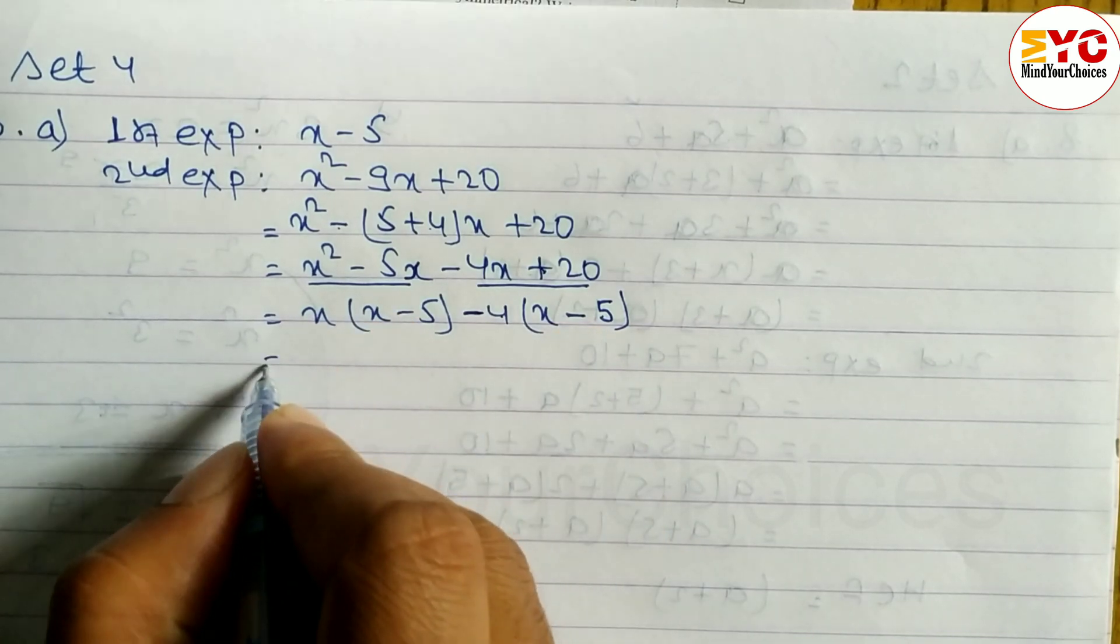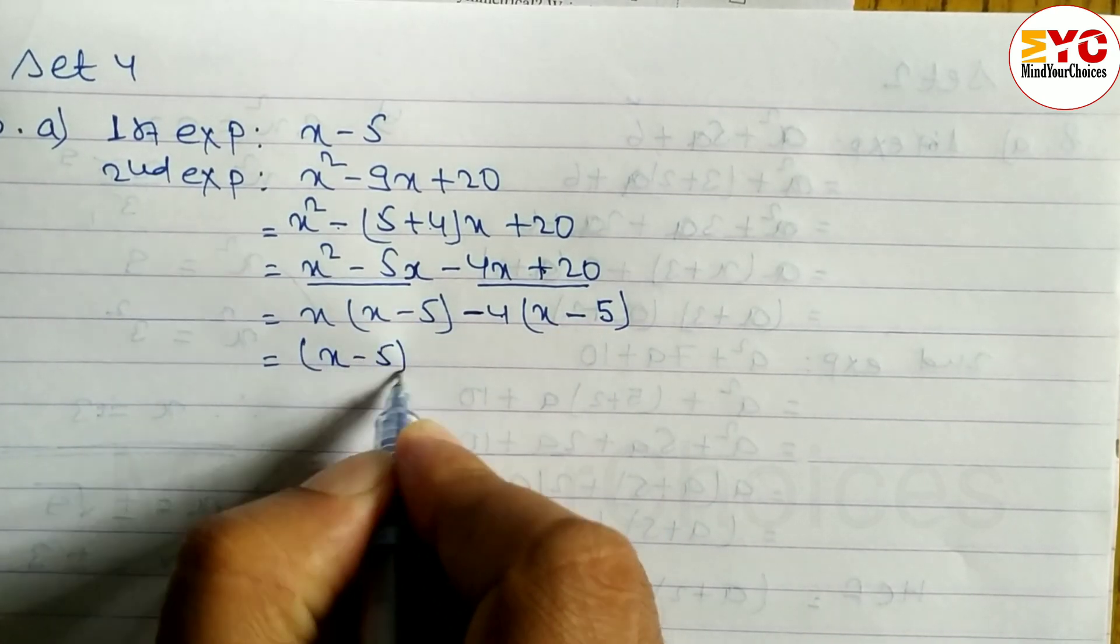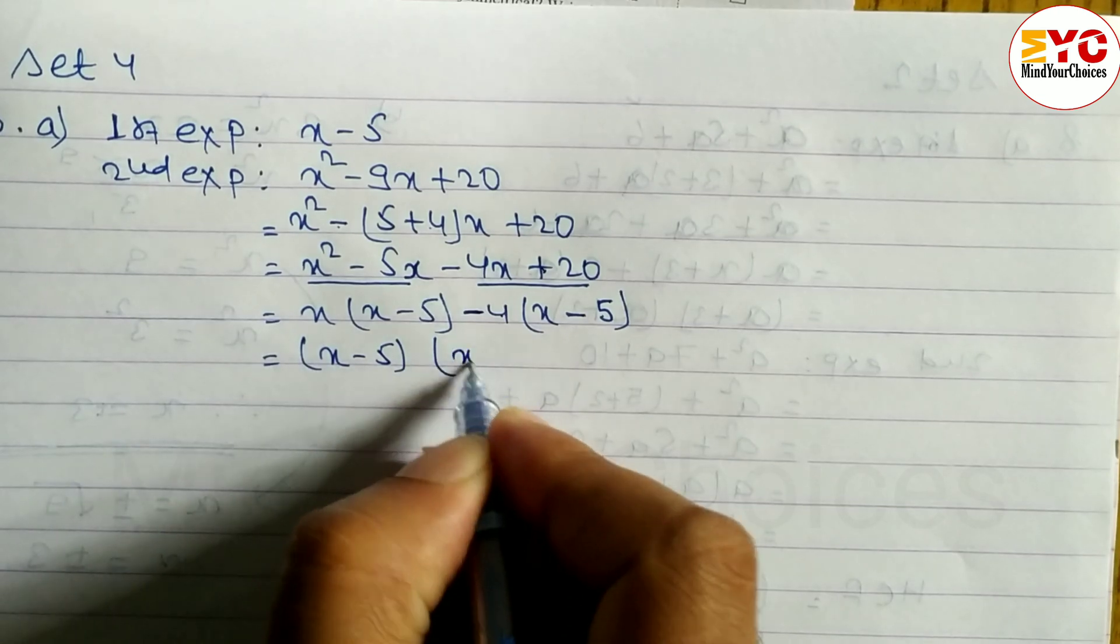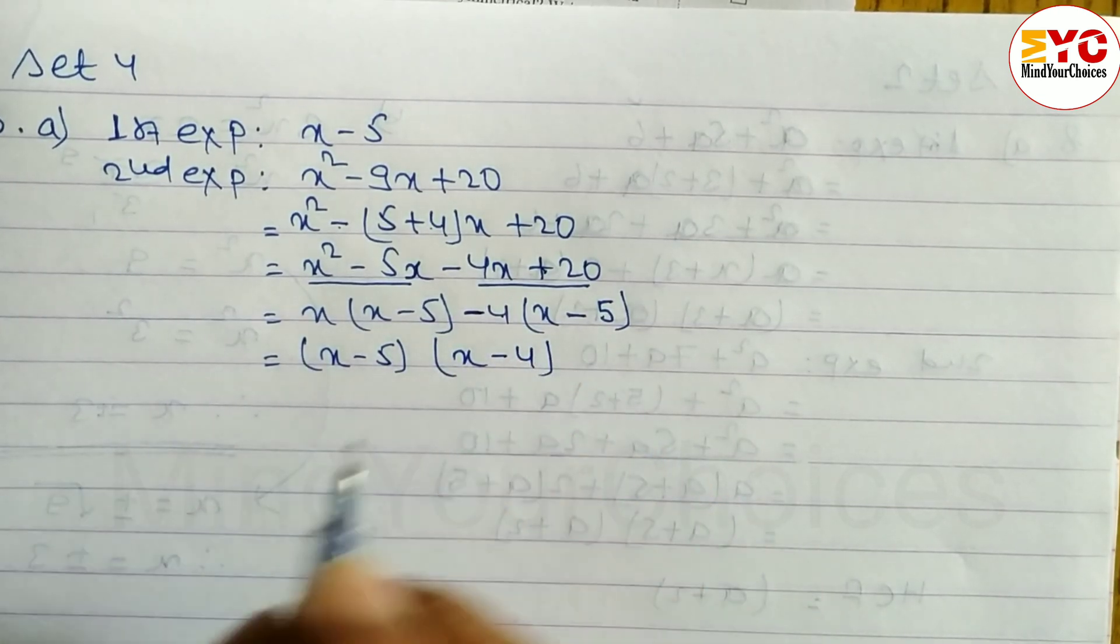Now we can take common. So x-5 we can take common. Remaining what? Here x is x, minus 4, minus 4. Okay, up to here?